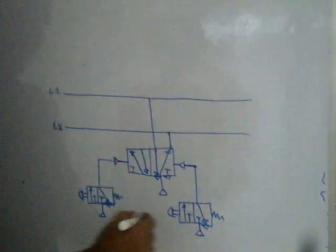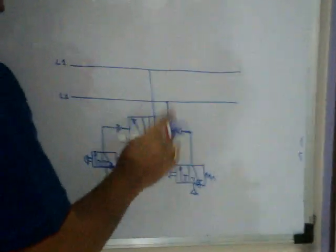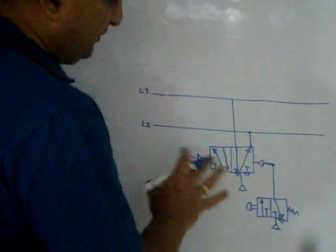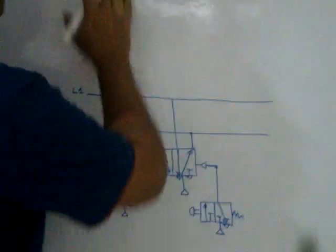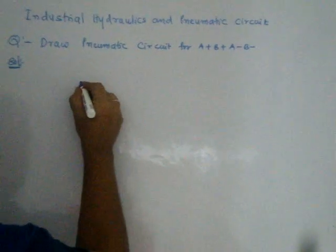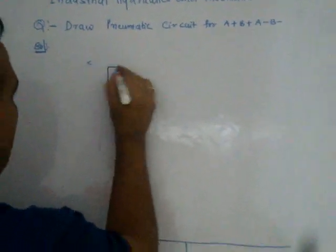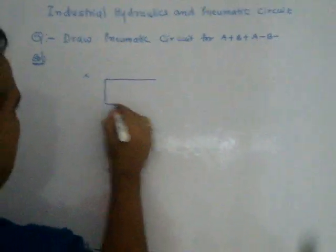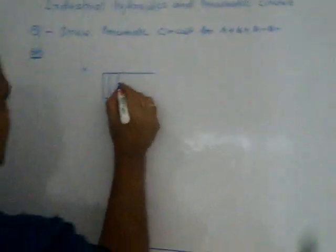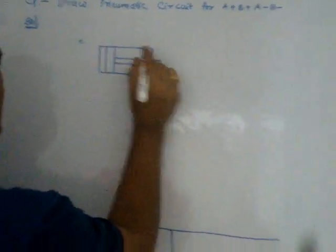If I push the first button, L1 is on and L2 is off. If I push the second, L2 is on and L1 is off. Now, two cylinders — A and B — are shown here.